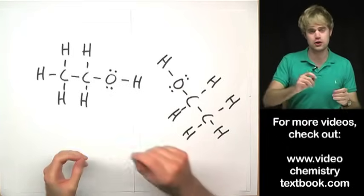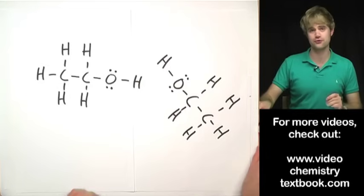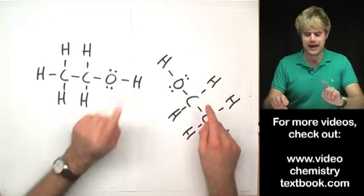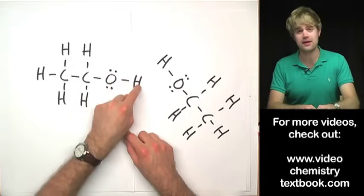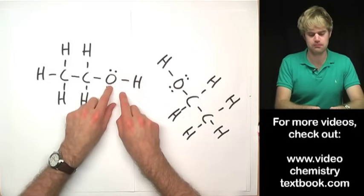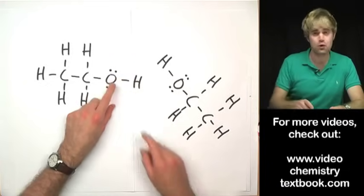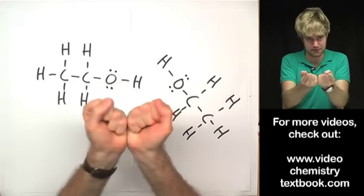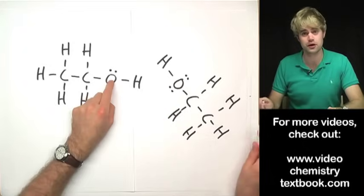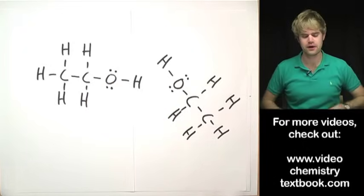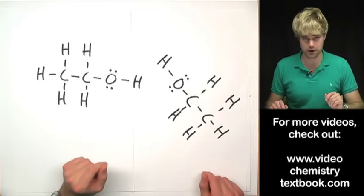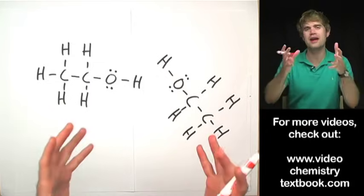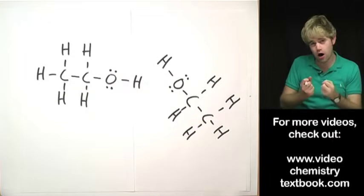Now that you know how to find and draw hydrogen bonds, let's talk about how hydrogen bonds form in the first place. Here I have two ethanol molecules that are going to form a hydrogen bond between them. It's all about the O and the H. The O and H in a molecule are connected by a covalent bond — they're sharing electrons. However, they are not sharing those electrons equally: oxygen has a higher electronegativity, meaning when it shares with hydrogen, it hogs the electrons.